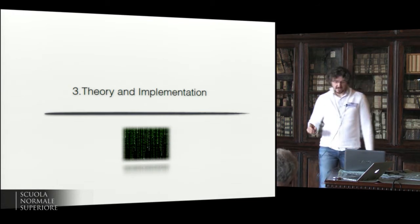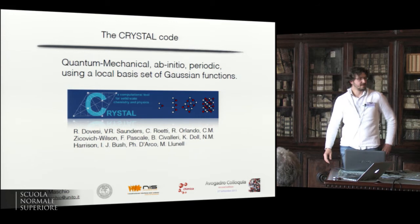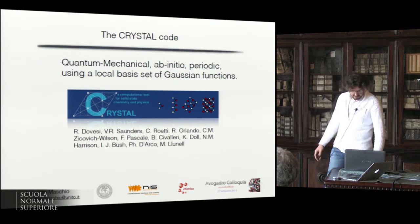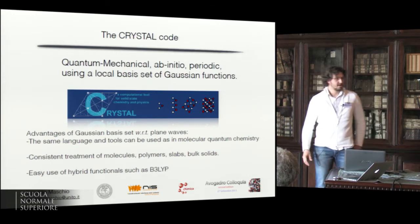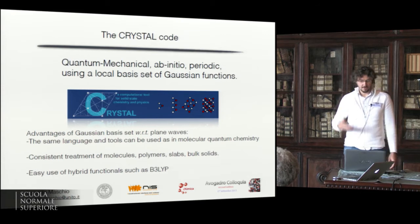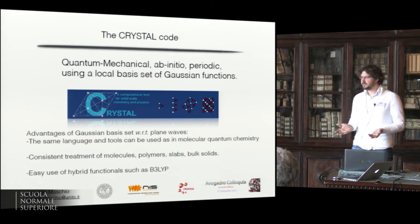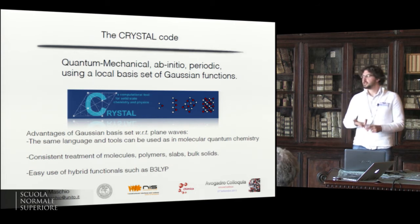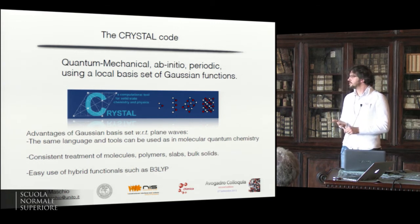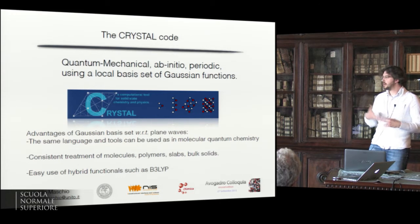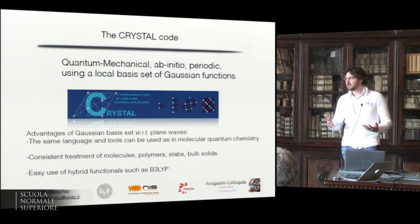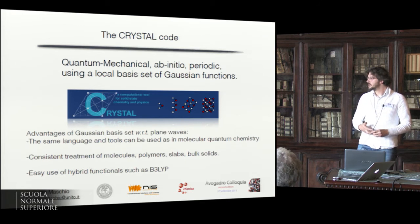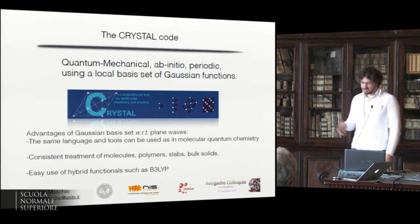We implemented this method for simulating the Raman spectra of solids into the CRYSTAL code, developed in our group in Torino since many years. The characteristic of this code with respect to other solid state codes is that it uses a local basis set of Gaussian functions. The advantages of Gaussian functions over plane waves are that they allow use of the same language and tools as in molecular quantum chemistry, allowing you to compute on the same footing molecules, polymers, slabs, and bulks, and allow an easy use of hybrid functionals.